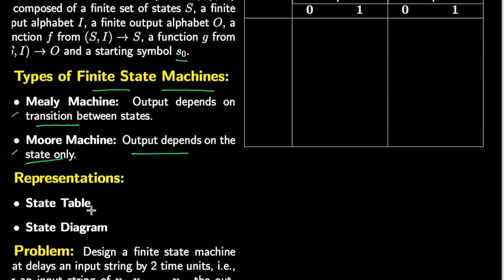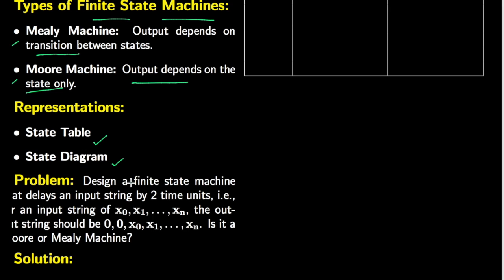From our previous discussion we know that the representations are two: one is the state table and one is the state diagram. Now let's apply all of this and try to solve a problem in which we have to design a finite state machine that delays an input string by two time units.